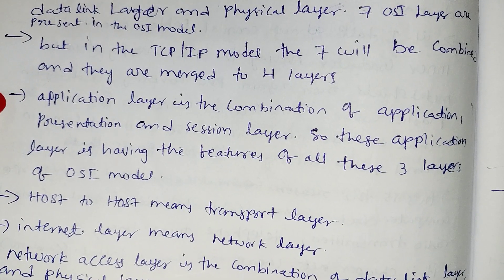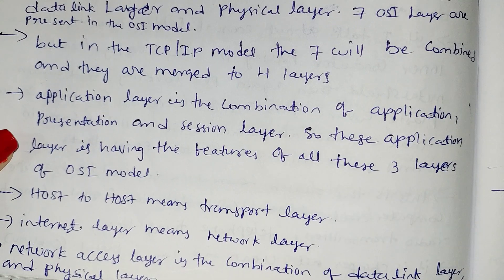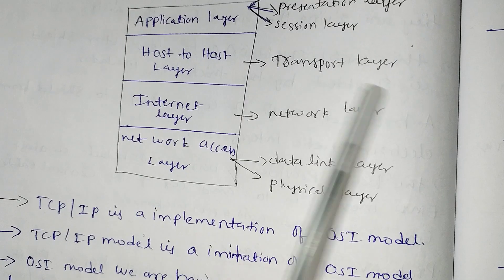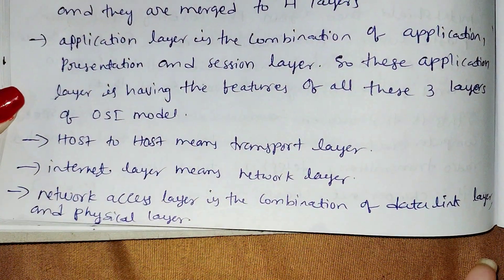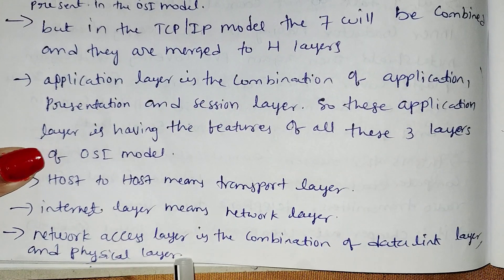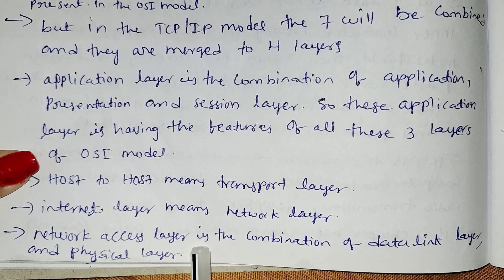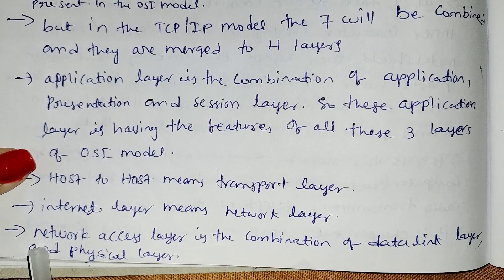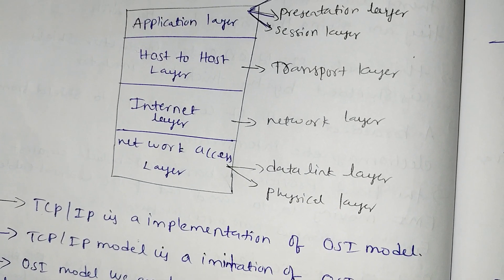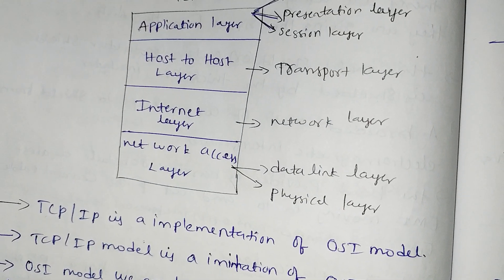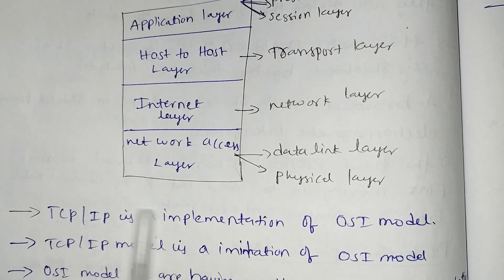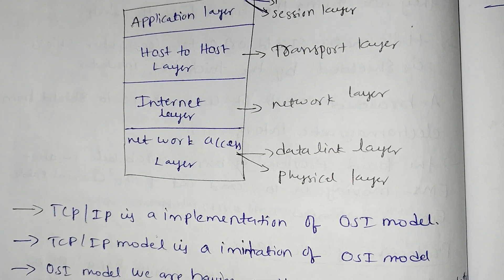The internet layer corresponds to the network layer. The network access layer is the combination of the data link layer and physical layer.